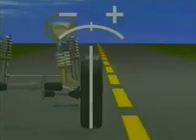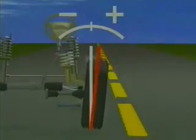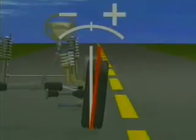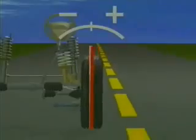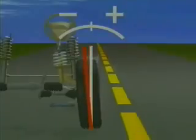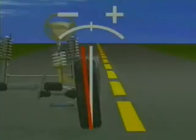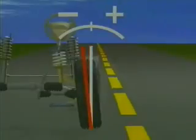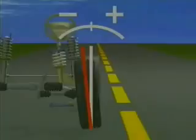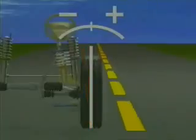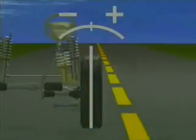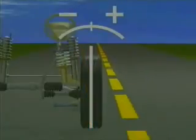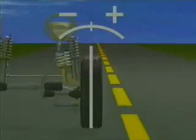When a wheel tilts outward at the top it has positive camber, and when a wheel is tilted inward at the top it has negative camber. A slight amount of negative camber is normal since the top of the tires will move out with speed.